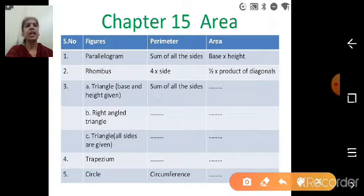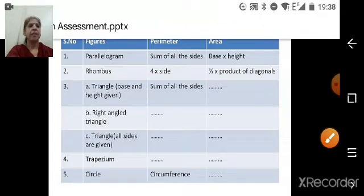Similarly, triangle, sum of all sides. Then here you have to complete this table. Then circle. When we say circle, perimeter of circle is nothing but its circumference. And area. Area you know. Pi r square. We have done all that. Right? Okay.